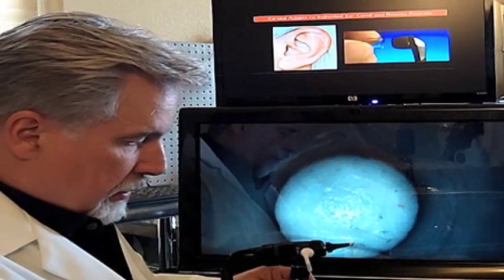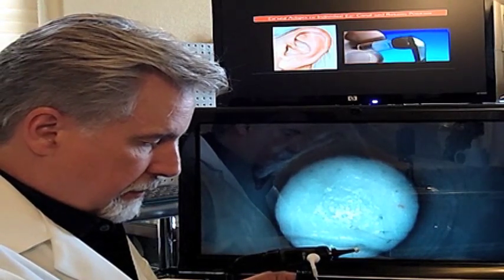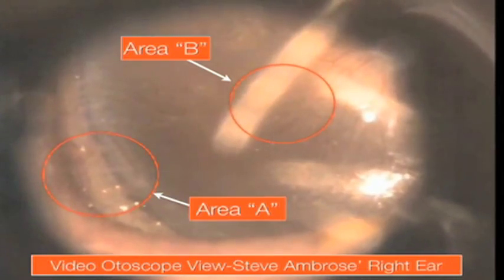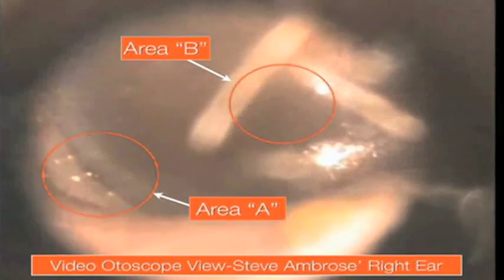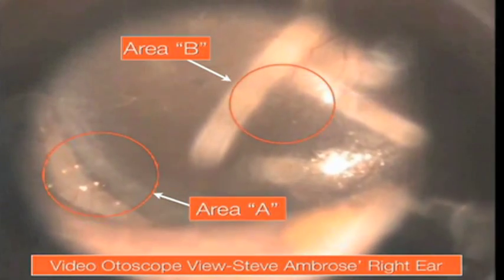When you look at the eardrum using a scope, you can see this dramatic movement. Here, there's specks of glitter on the eardrum. You can see them bounce when the sounds are played from the earbud.